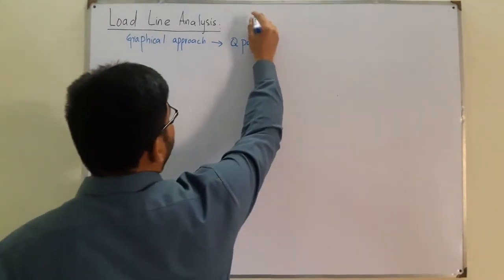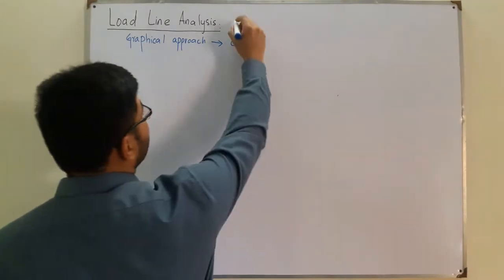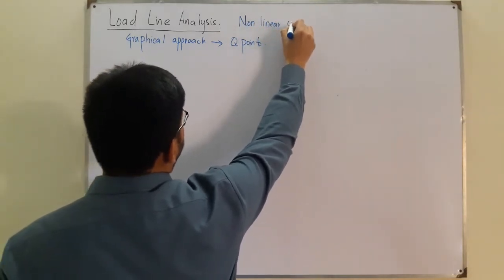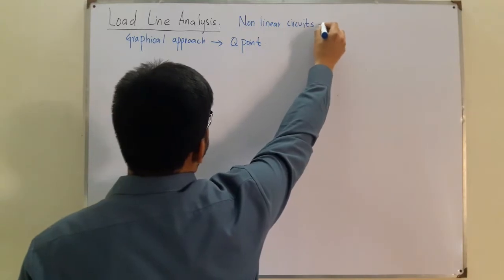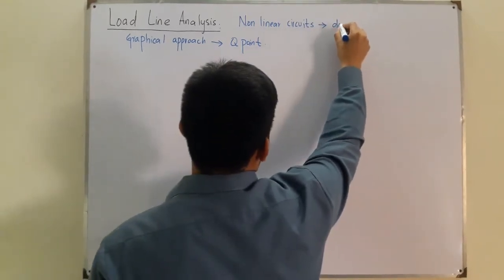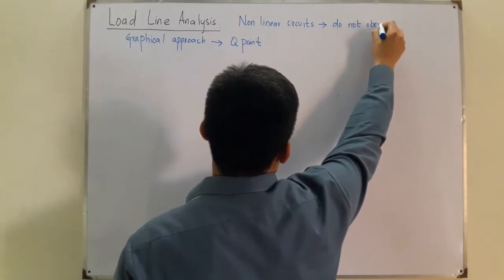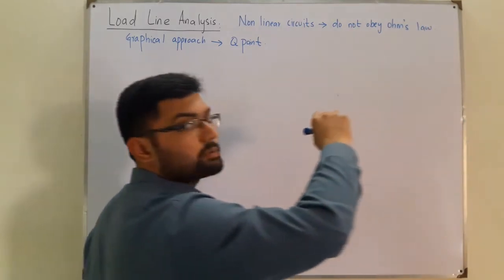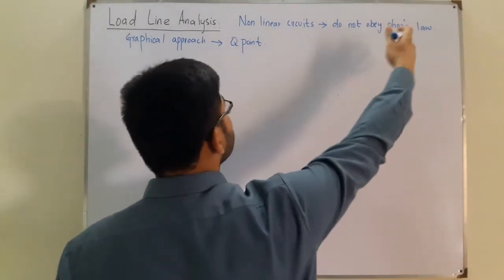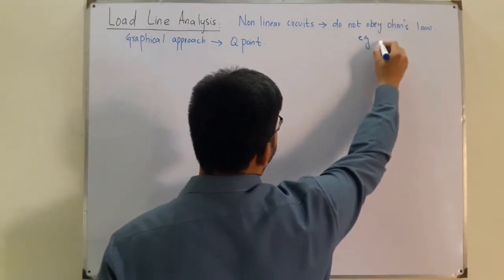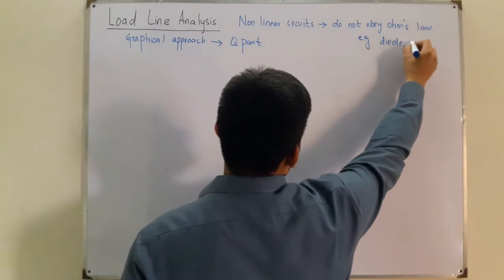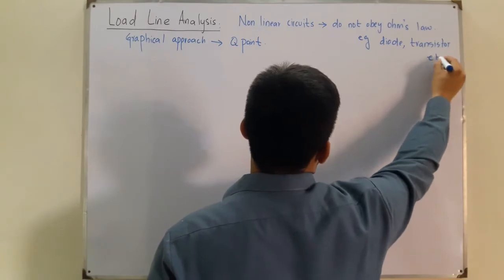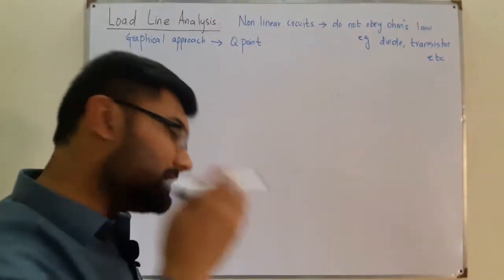Load line analysis is done for nonlinear circuits. These are circuits that do not obey Ohm's law — that is, the voltage is not directly proportional to the current. Examples of nonlinear devices are the diode and the transistor.